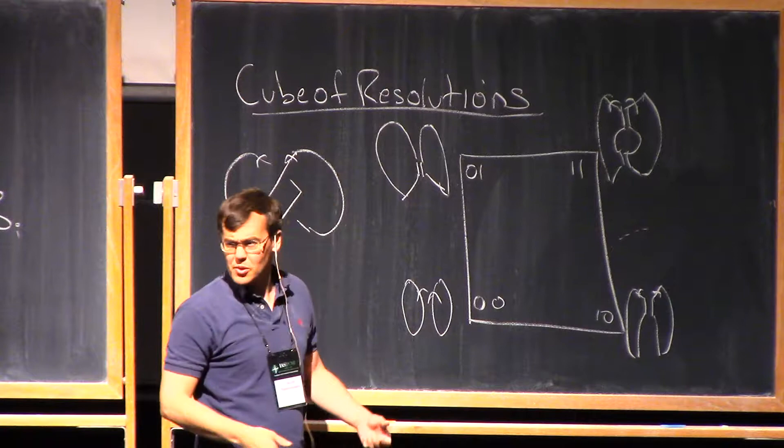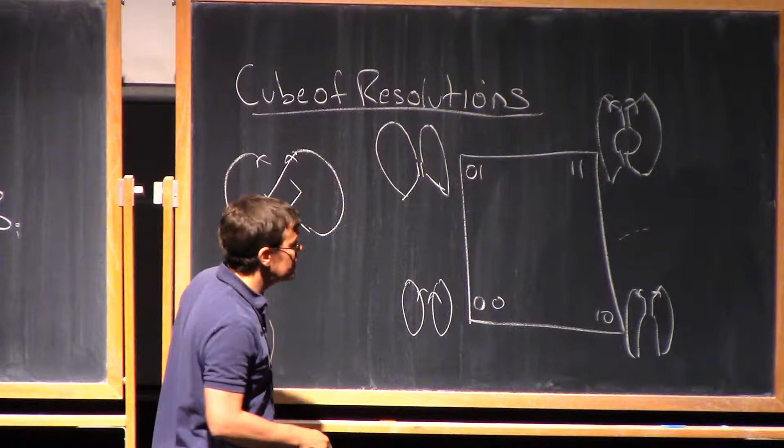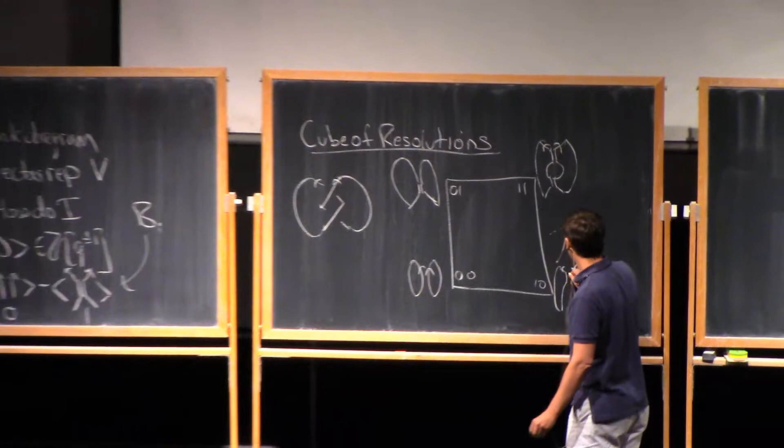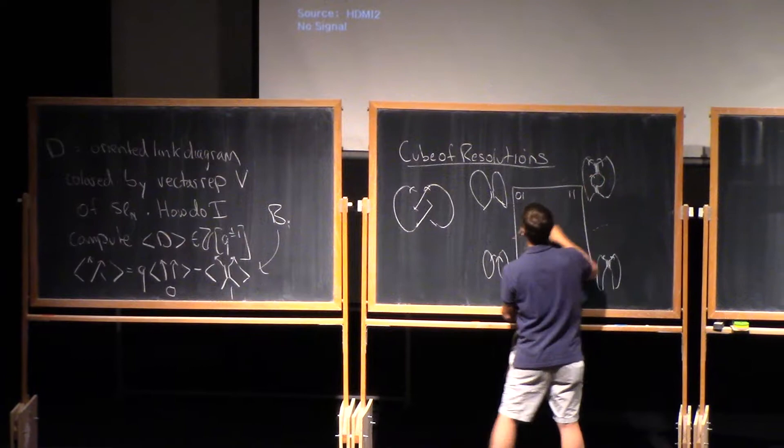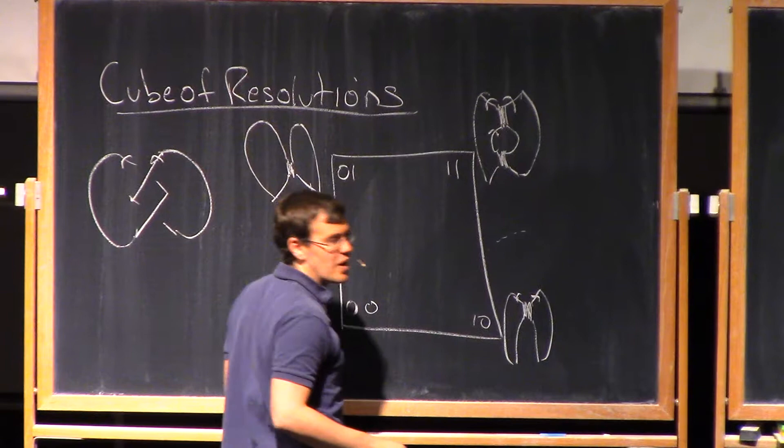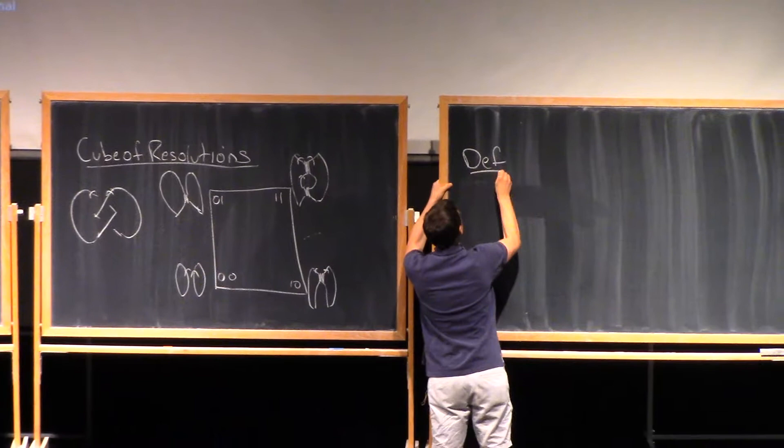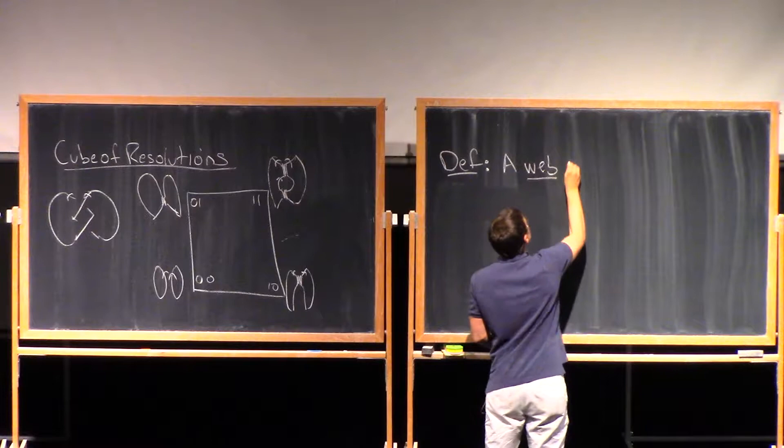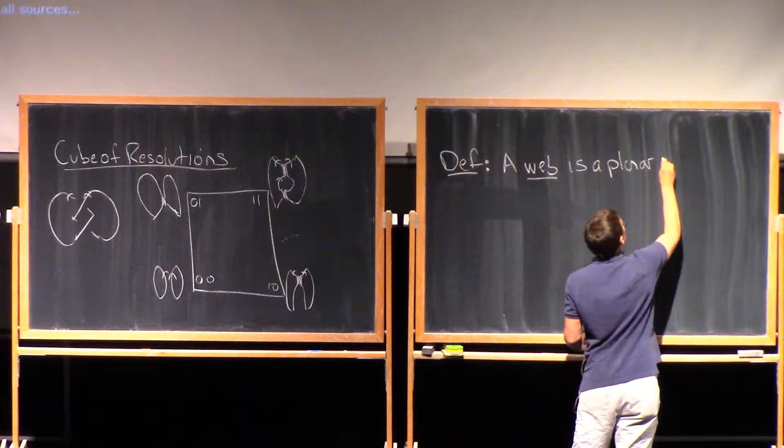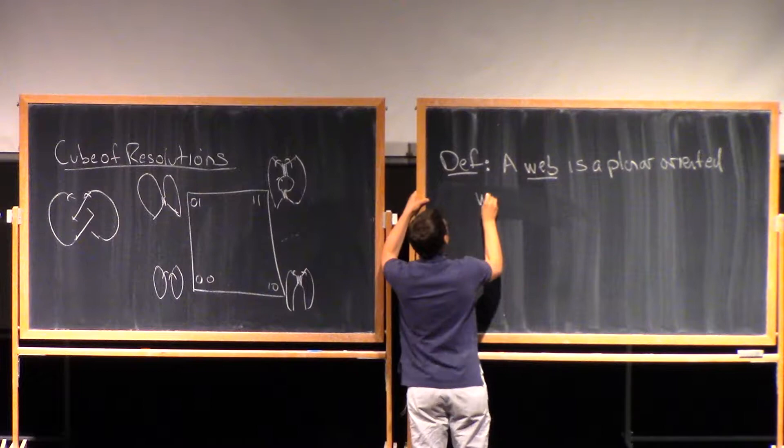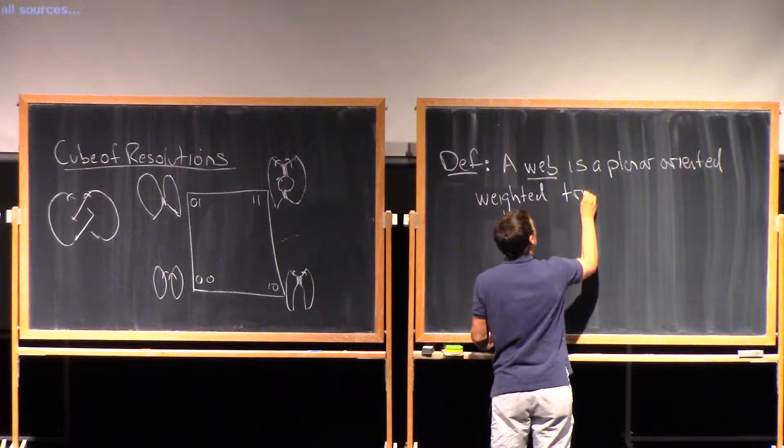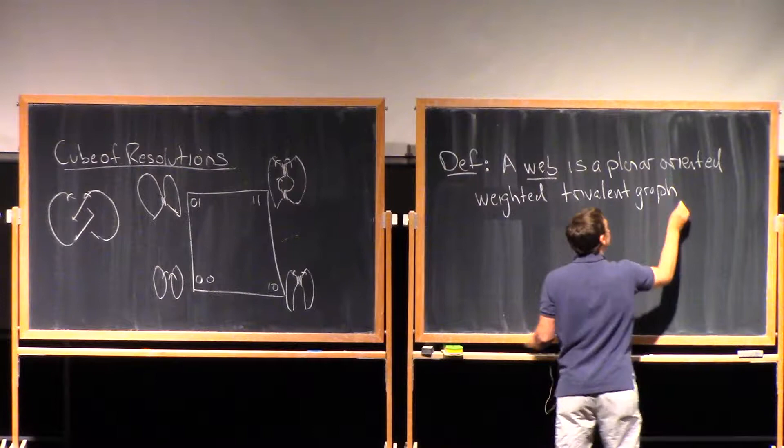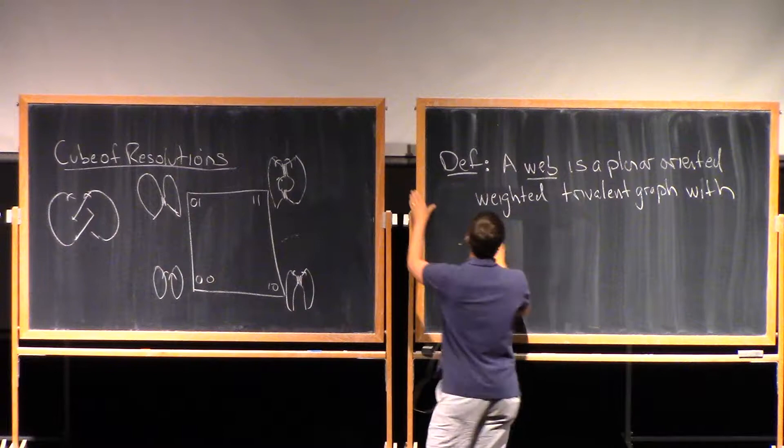And you should notice that this is very similar to the picture that we had back when we were thinking about the Jones polynomial. So I guess really, maybe let's make a definition. So in this picture I have these things with these fat edges in them. Really, the way you should think about this fat edge is it's sort of a weight two edge as opposed to these thinner edges which are weight one. So let's make a general definition. So a web is a planar-oriented weighted trivalent graph with zero flux.